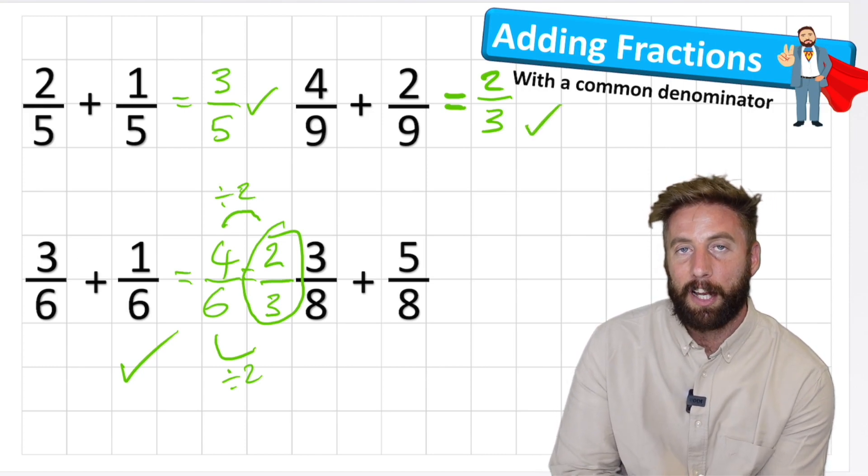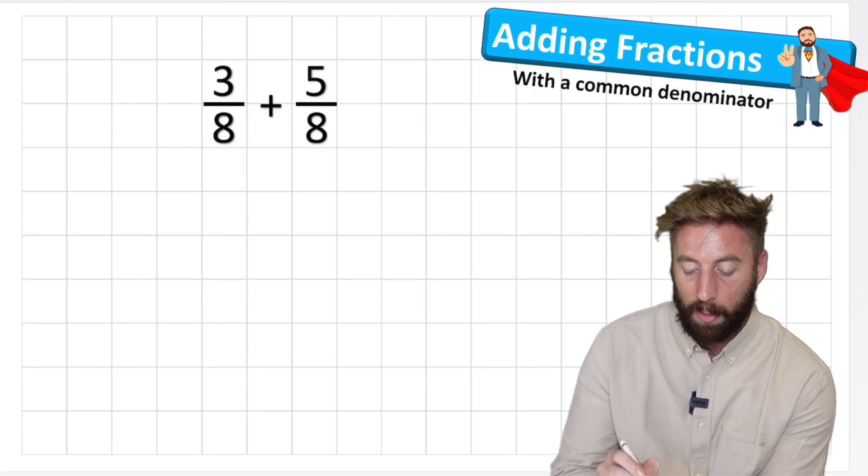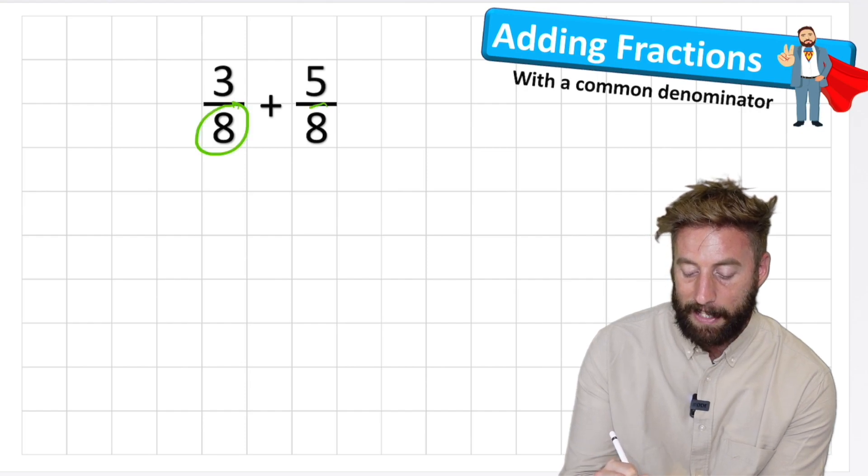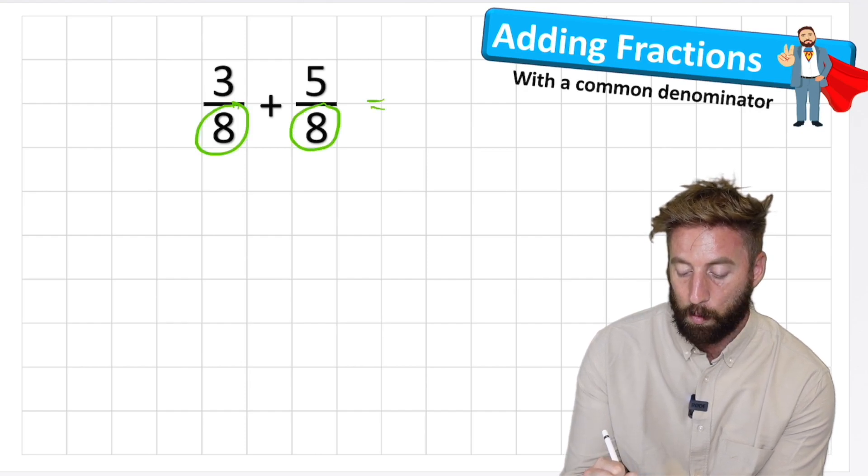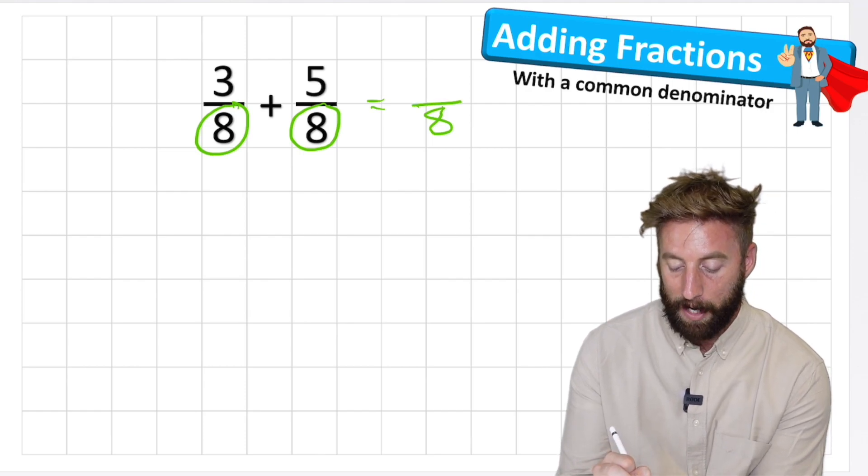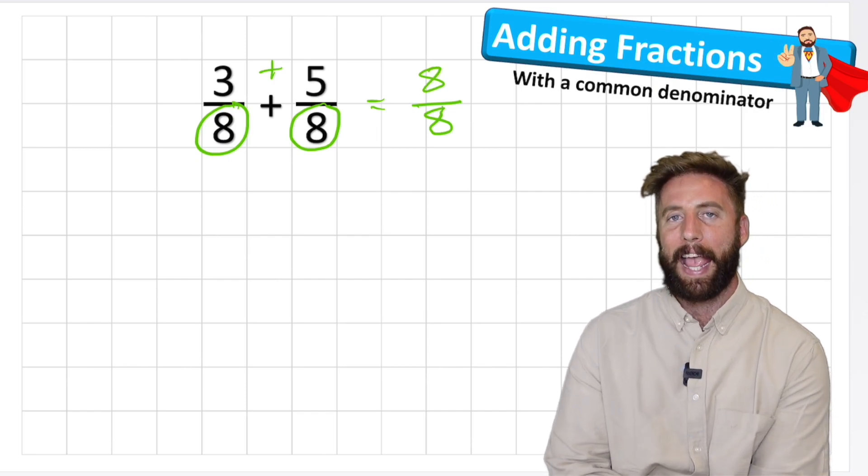Now last question here is a little bit different. I have three eighths plus five eighths, let's have a look at it, three eighths plus five eighths. So same thing again, I'm working in eighths, therefore my denominator will still be an eight. And now I can just add my two numerators, three add five equals eight. Hmm, eight eighths.